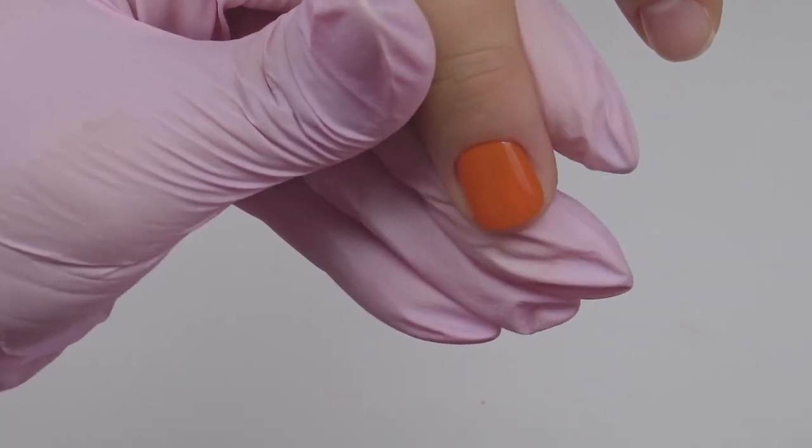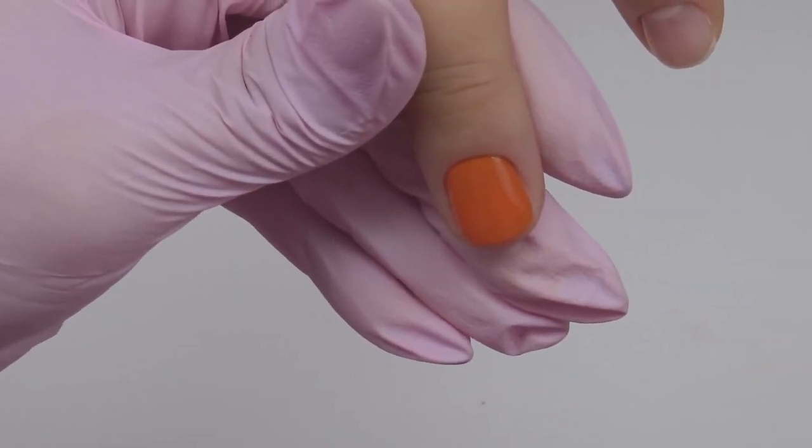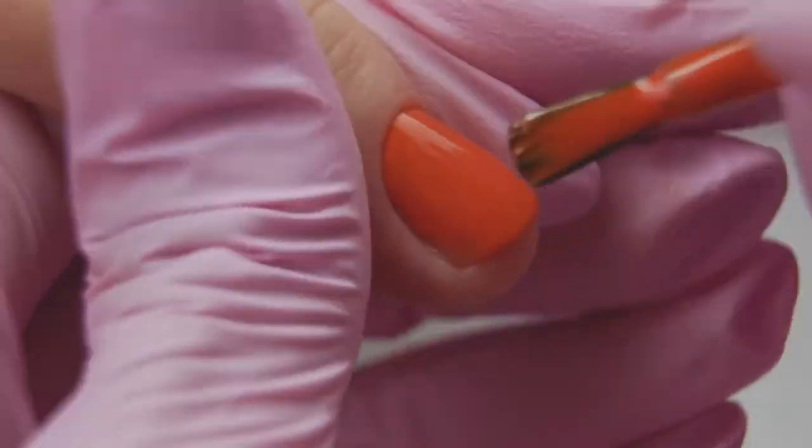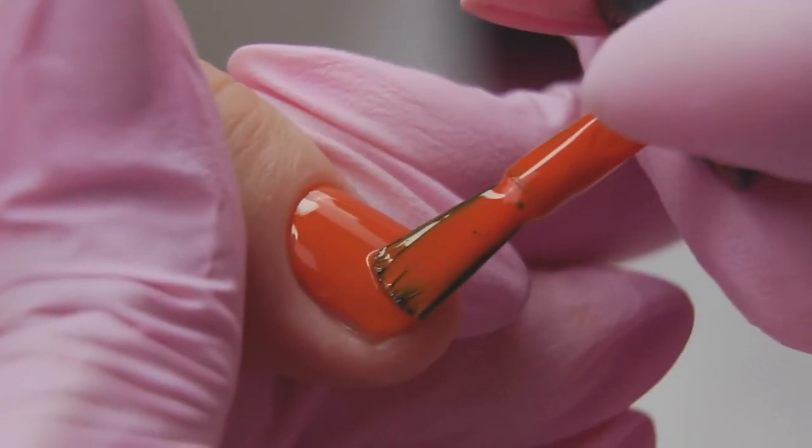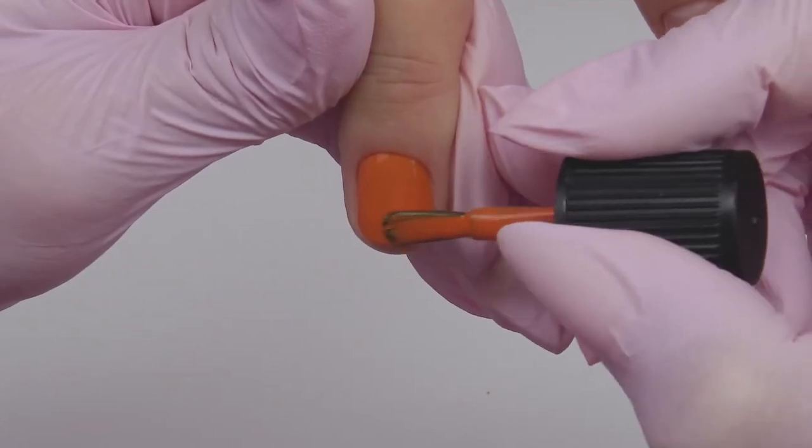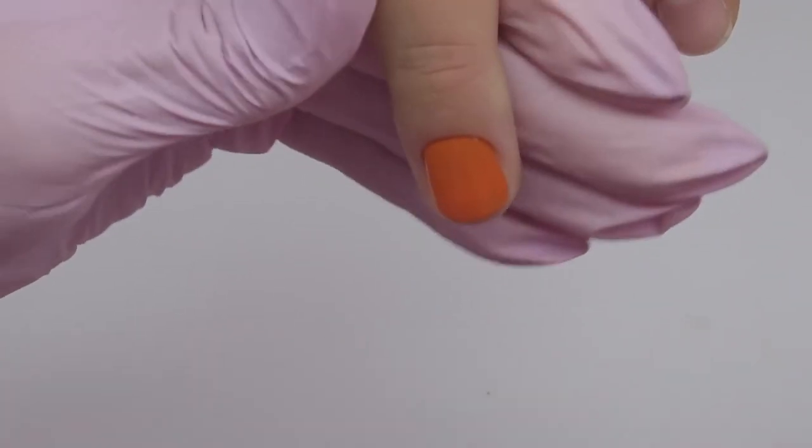You can also use this brush to seal the free edge if you want to. Or you can fan the brush like this and paint along the free edge. This way you won't get on the front nail fault and it will be clean.